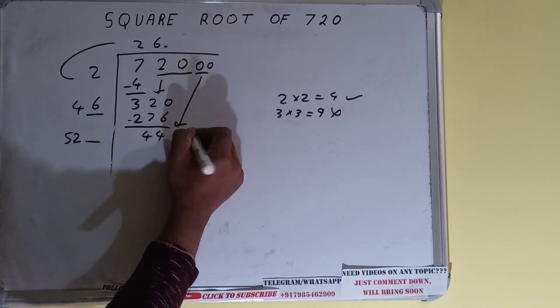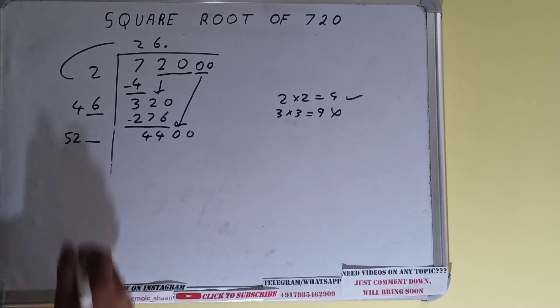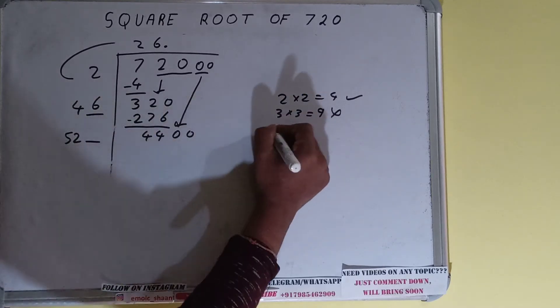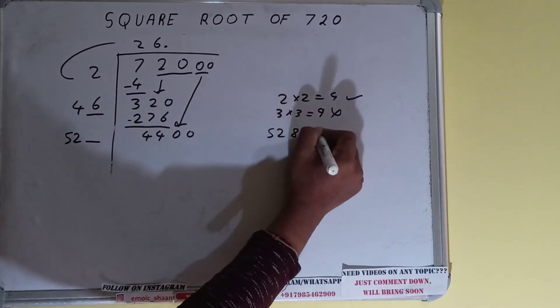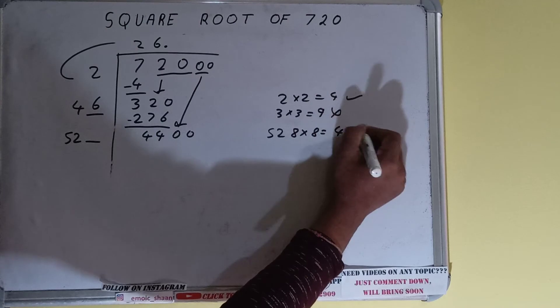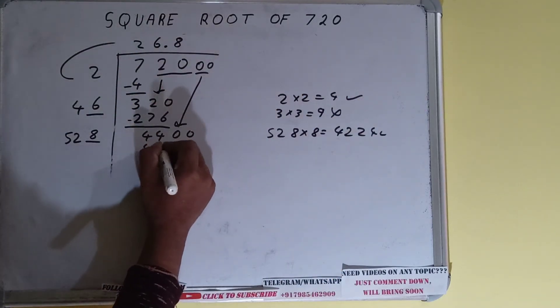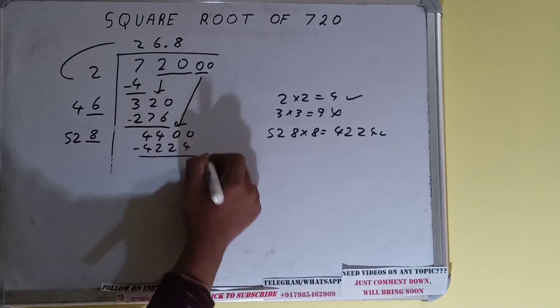Now we can try 8 times. 528 into 8 we can try, it will be 4224, that is good to take. So 8 here and 8 here, 4224. Subtract it.